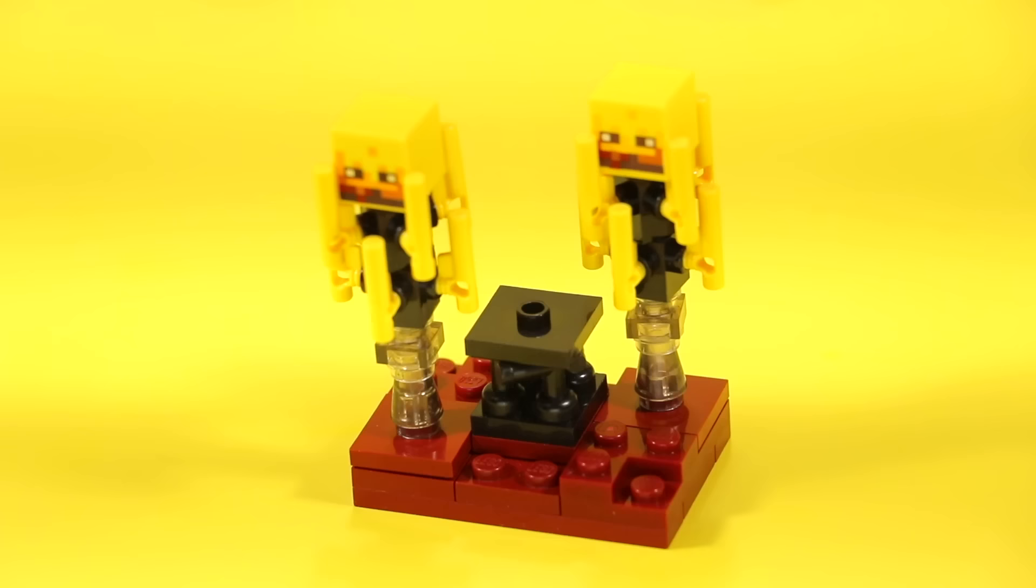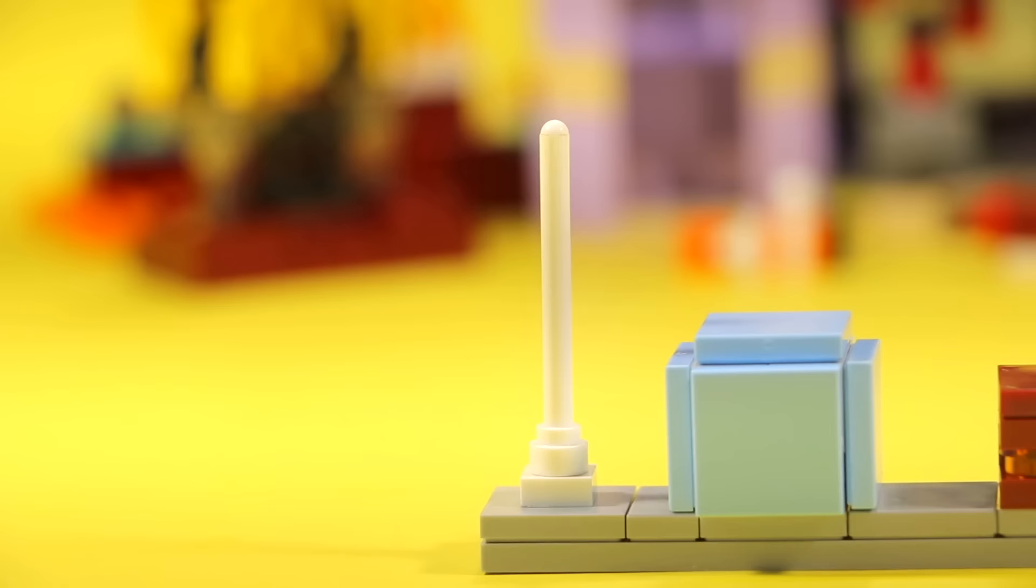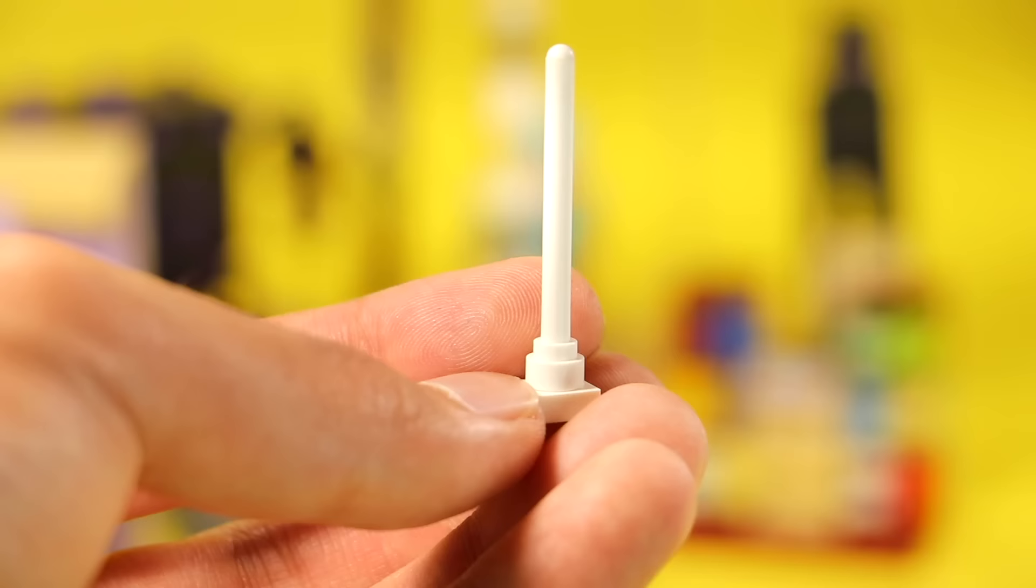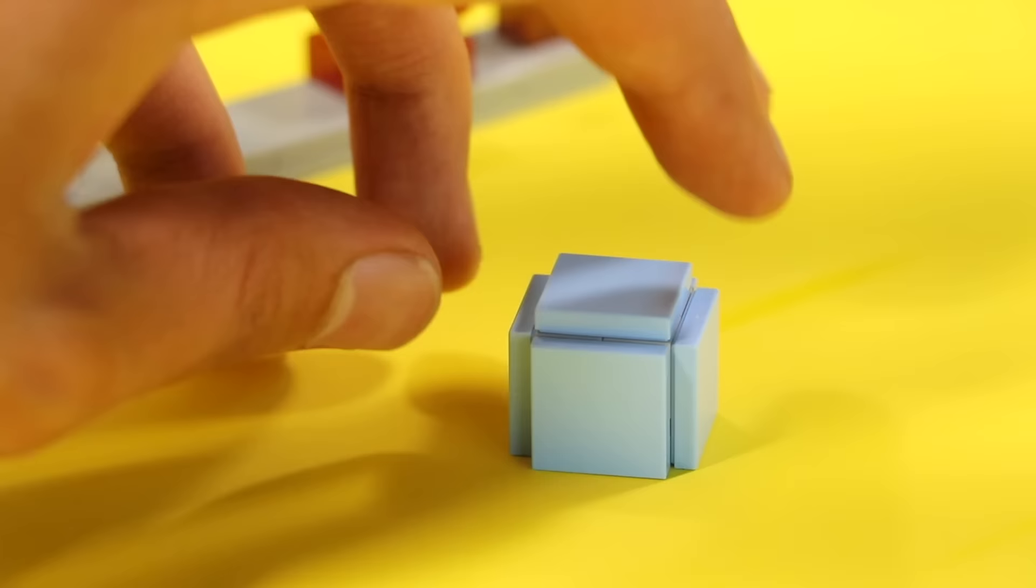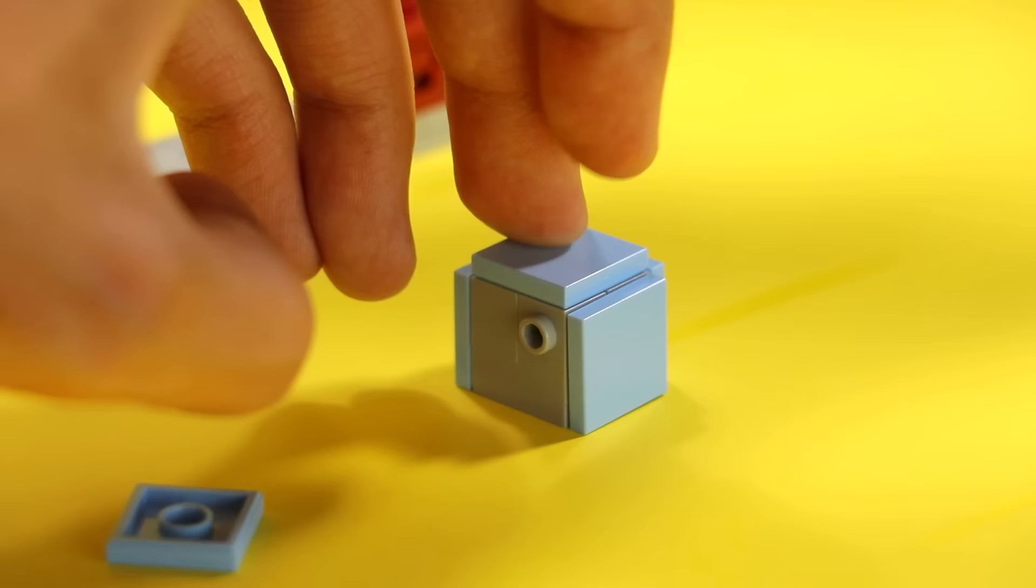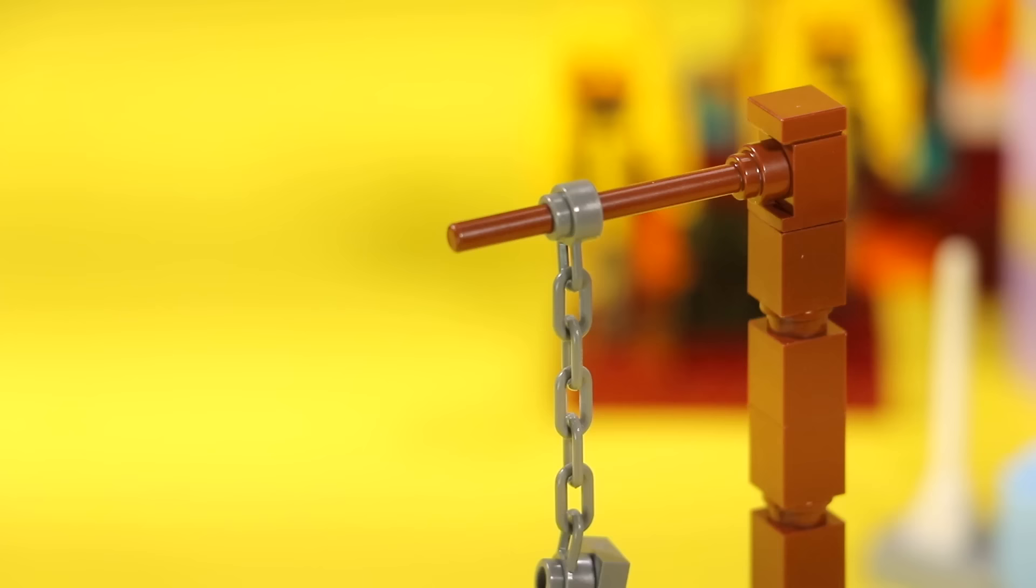Here are some simple lighting designs. The one on the very left is an end rod - this is the one you find in the end cities after you defeat the dragon. This next one is like this prismarine light - I forgot the name, but you find it in the underwater ocean monuments. And then there's also a magma cube and a simple torch.